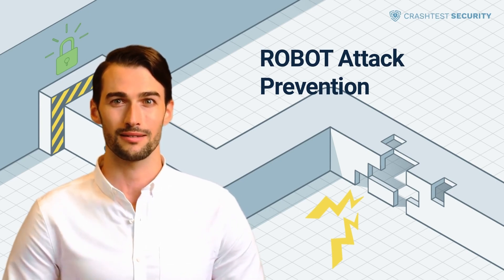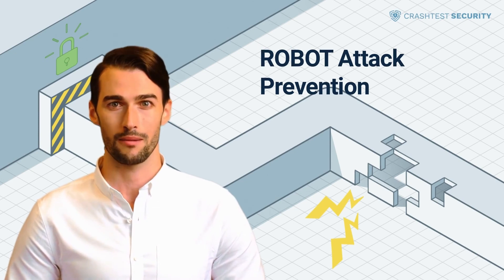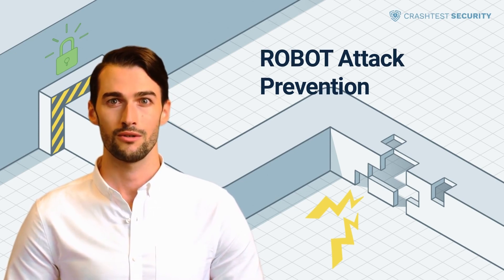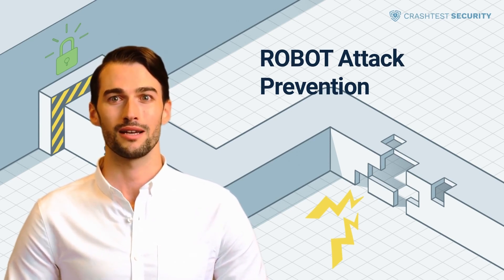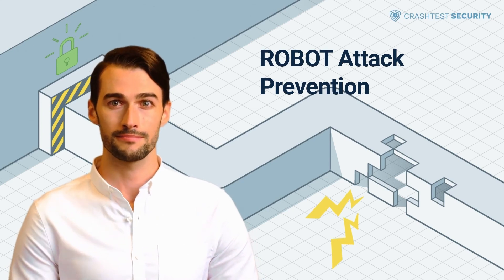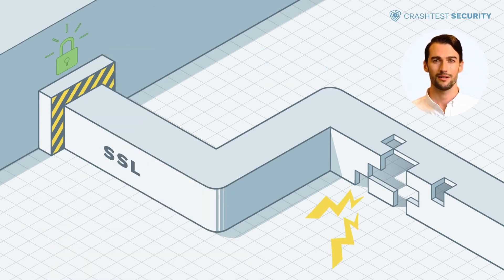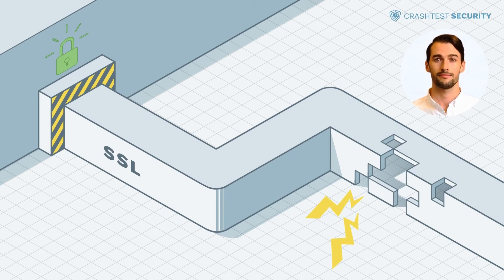What's the state of your digital security, and how protected is your web app or API? You can use Crash Test Security's powerful vulnerability testing software to check for ROBOT vulnerability and find out if any elements in your systems are susceptible to threats like it. Try Crash Test Security today to discover how it integrates into your development stack for efficient, automated vulnerability scanning — the trial is free. Subscribe to the Crash Test Security channel to get more information about the most significant web security threats, their prevention, and how to use the Crash Test Security Suite.